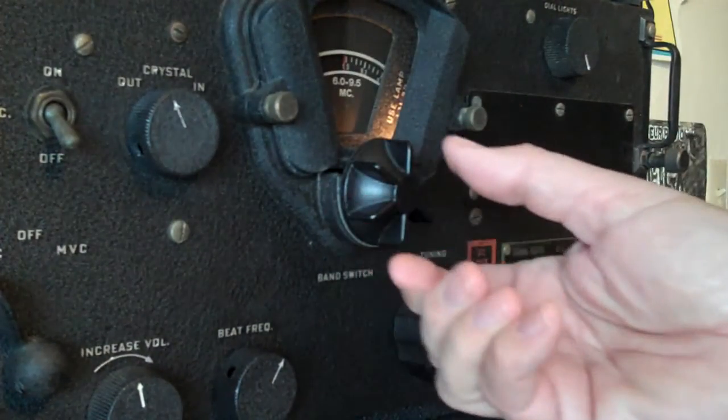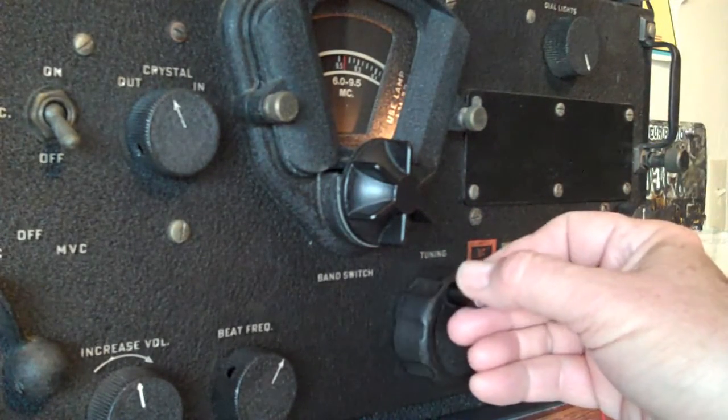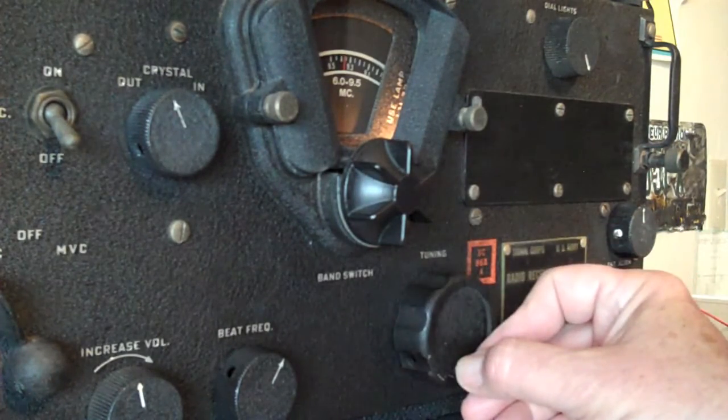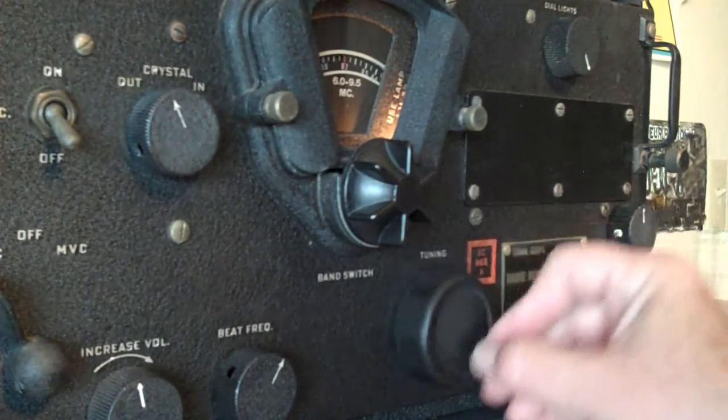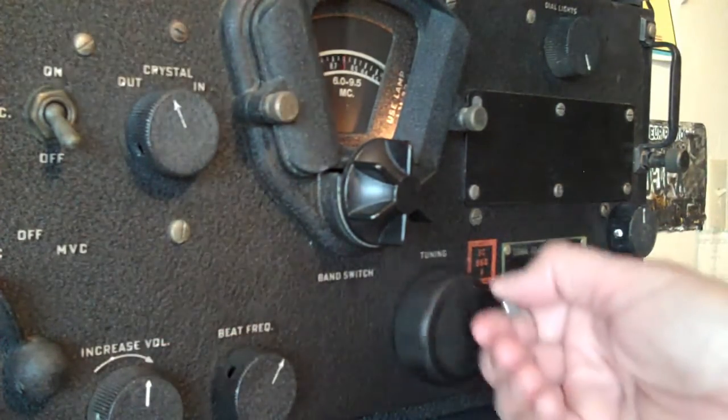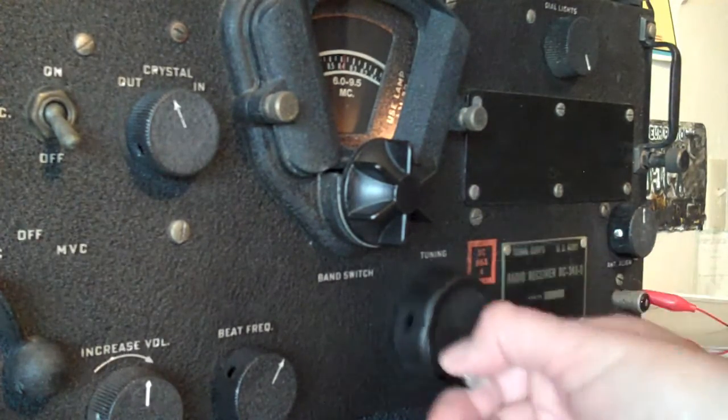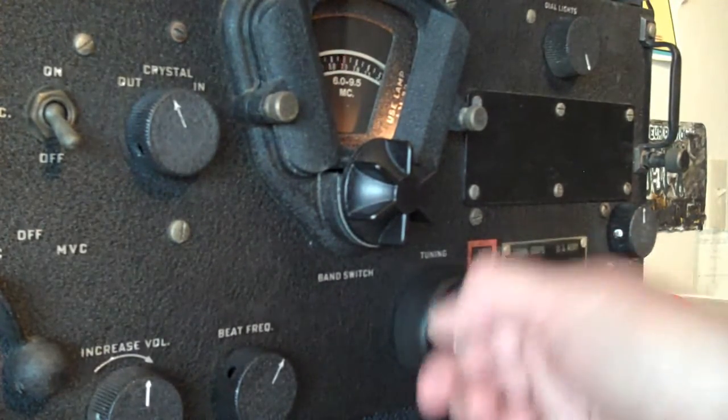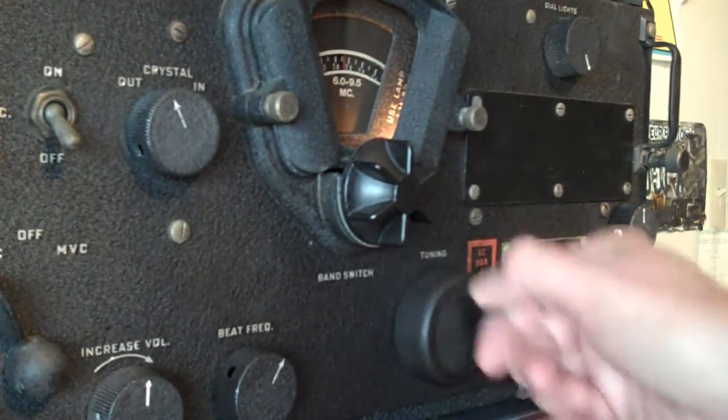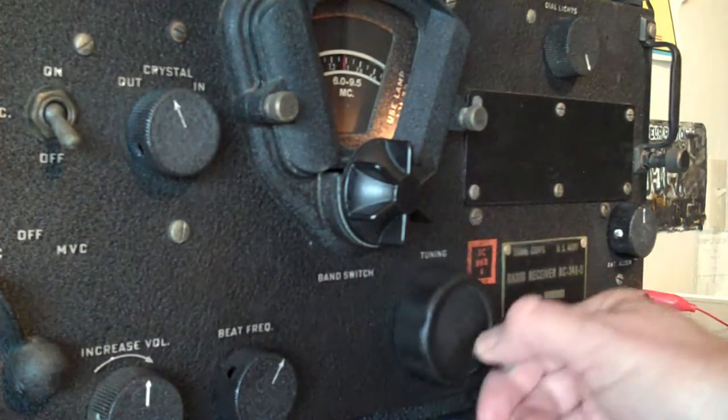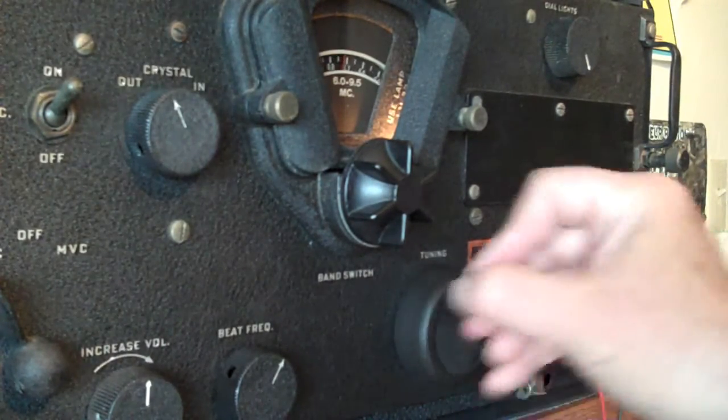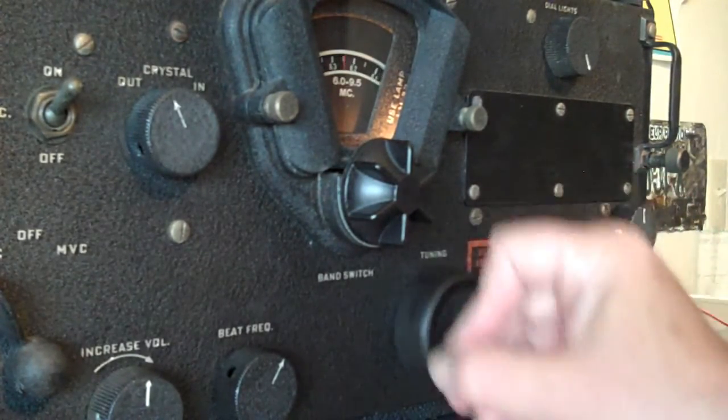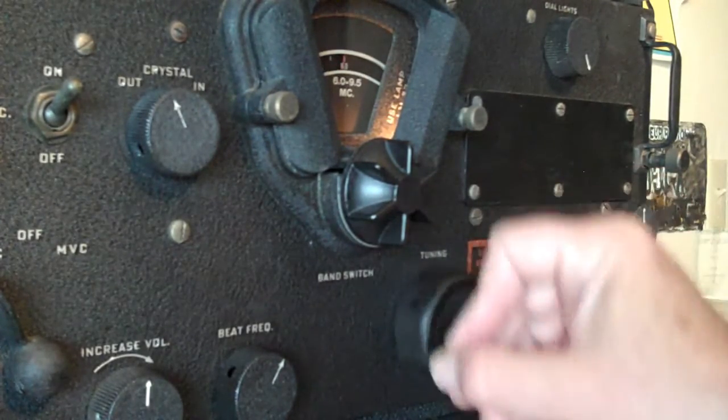Okay, let's try the next band, 6.0 to 9.5. There's some stuff up in the shortwave. Something there, just a carrier. Oh, that's 40 meters. Yep, a lot of stuff going on on 40.